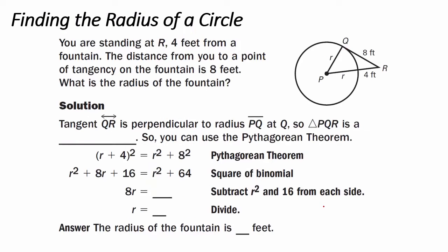Example 2: finding the radius of a circle. You are standing at point R, 4 feet from a fountain. The distance from you to a point of tangency on the fountain is 8 feet. What is the radius of the fountain? We create a triangle — from the center to the endpoints of the circle, this is our radius. Since this is a point of tangency and the line is tangent to the circle, it is perpendicular to line R, creating a 90-degree angle. Triangle PQR is a right triangle, so we use the Pythagorean theorem: (R + 4)² = R² + 8², where R + 4 is our hypotenuse.